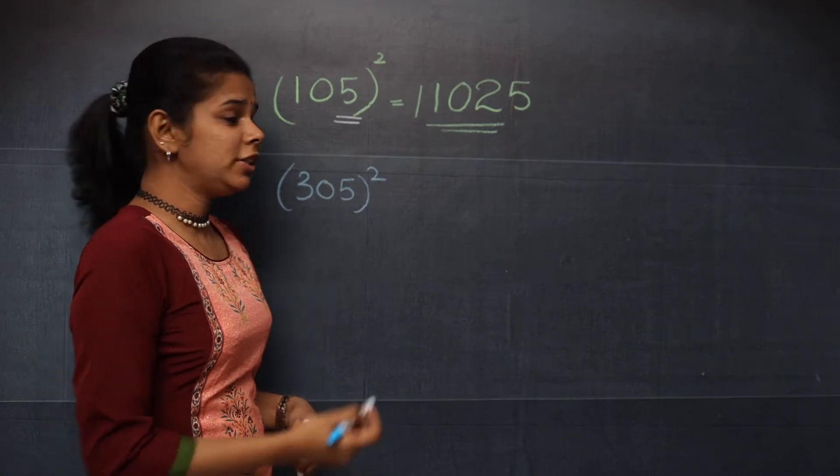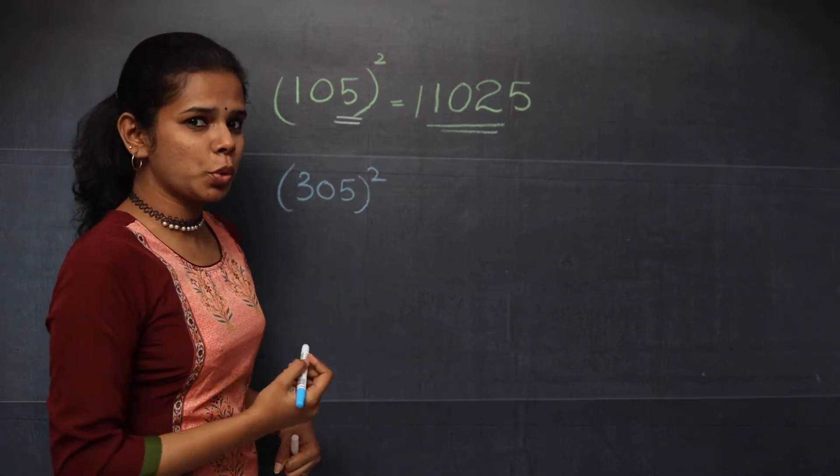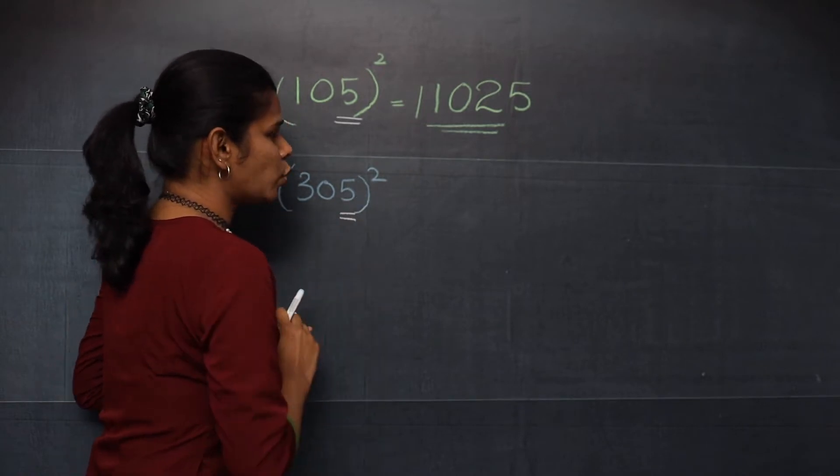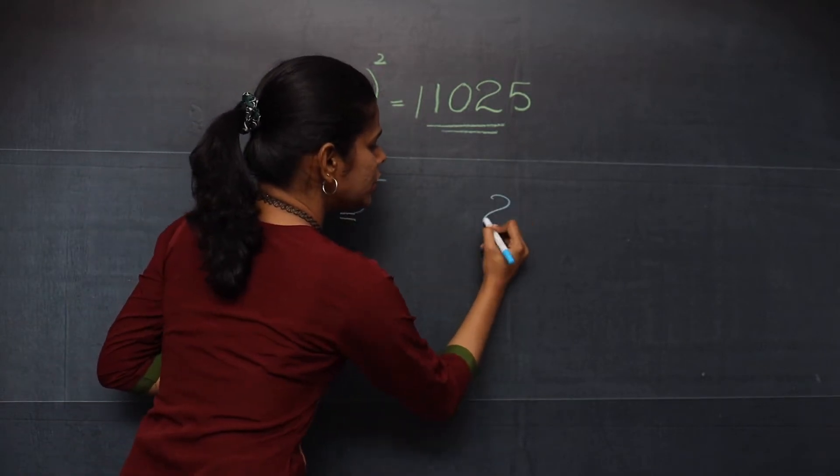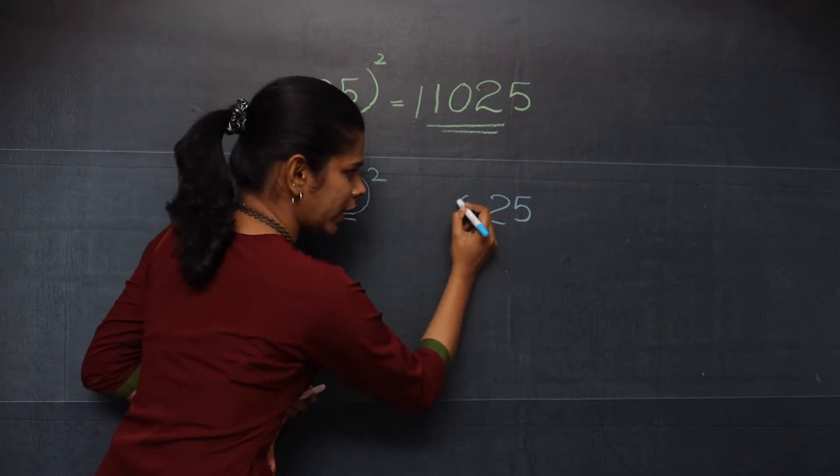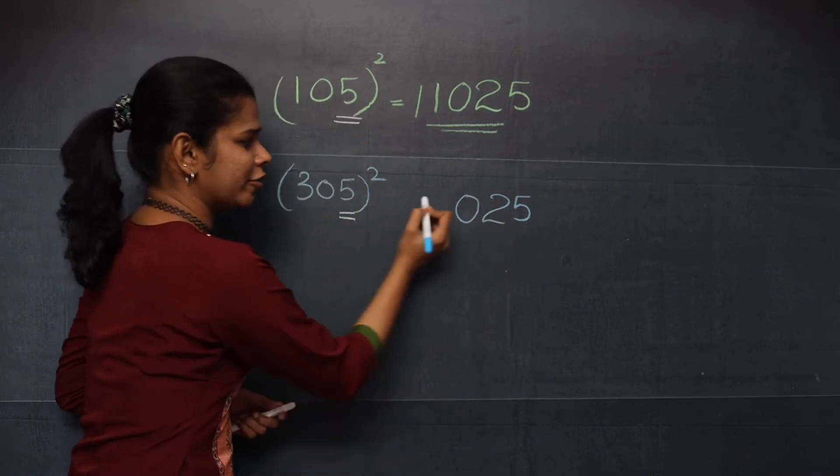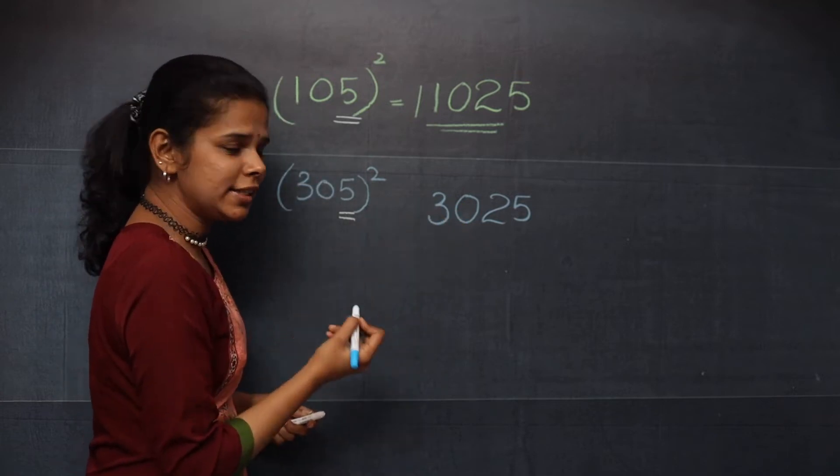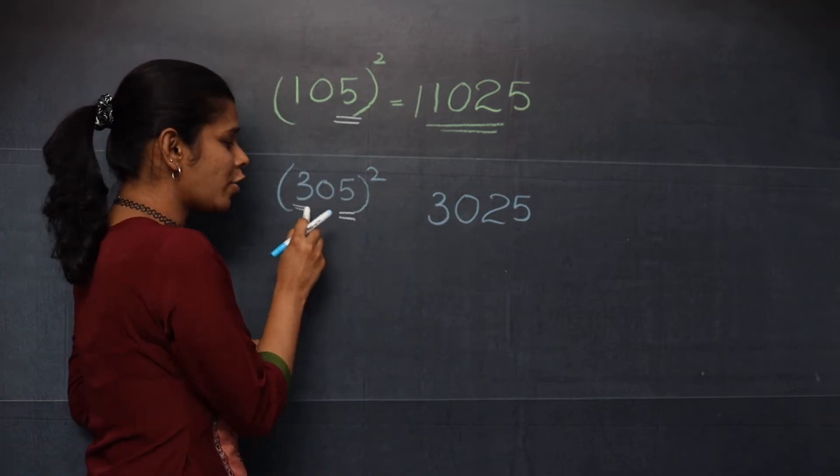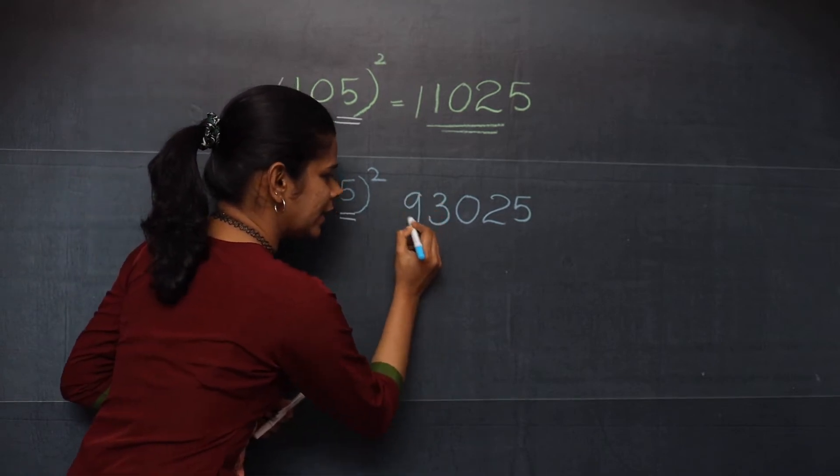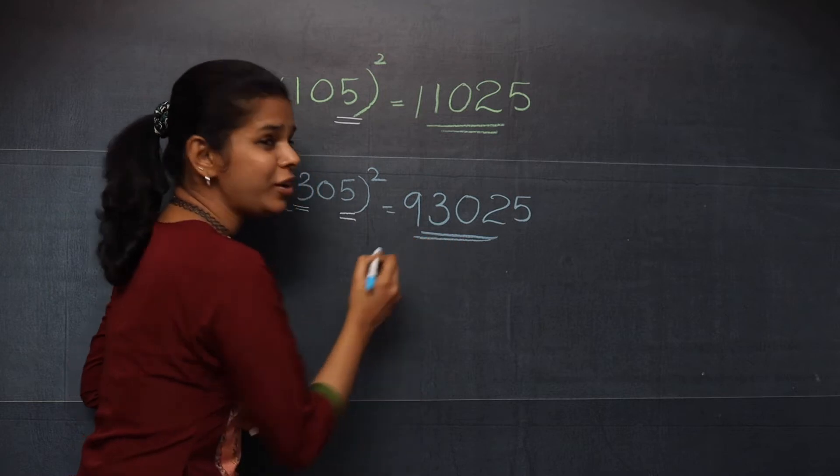Now let's find what is 305, the whole square. In the same way you will find what is 5 square and you know it is 25. After that the number is 0, you will write here and then you have 3, that also you will write here. And then what is the last step? You will take the square of the first number and that you will get 9. So this becomes your answer.